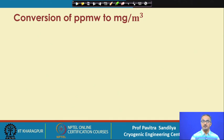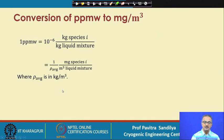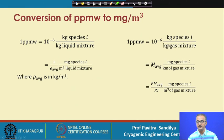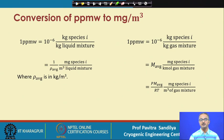For PPMW to milligrams per cubic meter: for liquids, 1 PPMW is 10 to the power minus 6 kilograms of species i per kilogram of liquid mixture, since for liquids we talk in terms of mass. Dividing by the average density gives milligrams of species i per cubic meter of the liquid mixture, where density is in kilograms per cubic meter. PPMW may also be used for gas — using molecular weight and the ideal gas law P·M / RT, we get milligrams of species per cubic meter of the gas mixture.